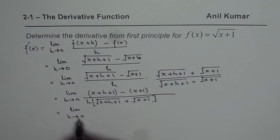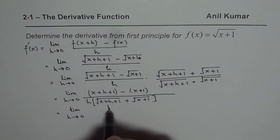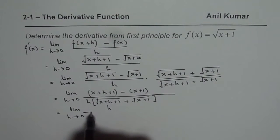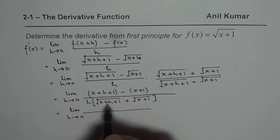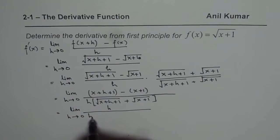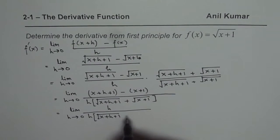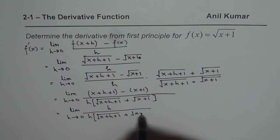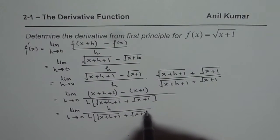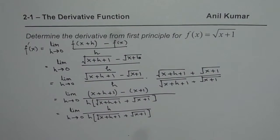So the numerator is h divided by the denominator h times [square root of (x plus h plus 1) plus square root of (x plus 1)]. Here h and h cancel out.